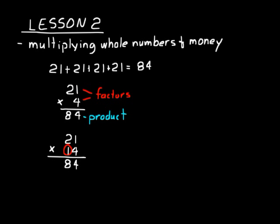We do twenty-one times ten, which is easy — twenty-one times ten is two hundred ten, so we write 2-1-0. And now we add this result together, doing two multiplications: twenty-one times four is eighty-four, twenty-one times ten is two hundred ten. We add those results together to get two hundred ninety-four as our answer.